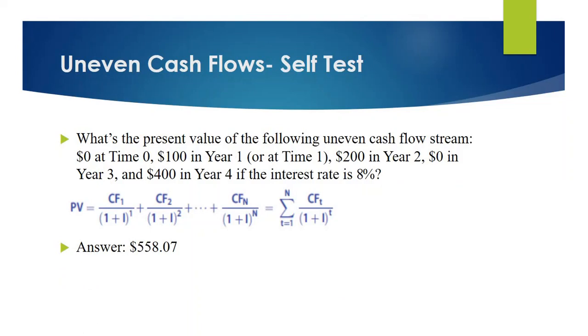Assume that your cash flows are as follows: zero dollars at time zero, then 100 dollars in time one, 200 dollars in year two, zero dollars again in year three, 400 dollars in year four. Your discount rate or interest rate is eight percent. Now I need to find out present value of your cash flow.